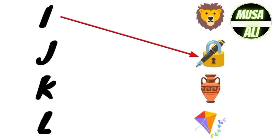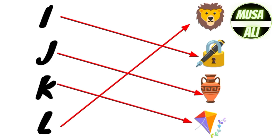I for Ice cream, J for Jug, K for Kite, L for Lion.